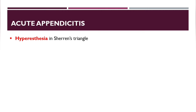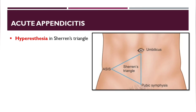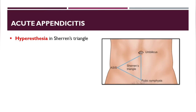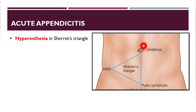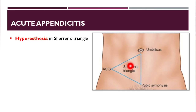There is increased sensitivity or hyperesthesia in Sherren's triangle, plotted by the umbilicus, anterior superior iliac spine, and pubic symphysis.